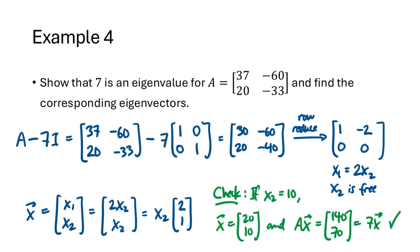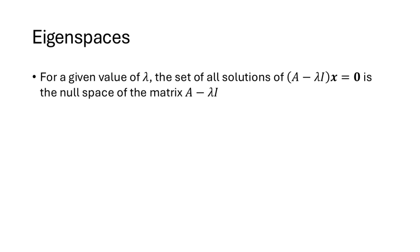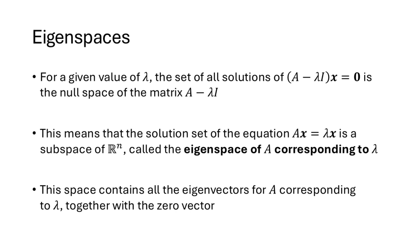We can verify this: choosing x2 equals 10 gives the vector 20, 10, and multiplying A times x gives 140, 70, which equals 7x. The set of all solutions of (A minus lambda I) times x equals 0 is the null space of A minus lambda I, giving us all eigenvectors corresponding to lambda. We call this set the eigenspace of A corresponding to lambda — which contains all eigenvectors, excluding the zero vector.